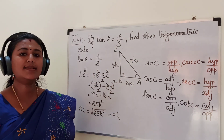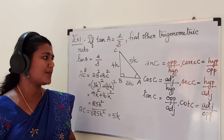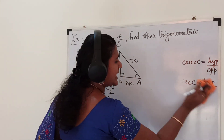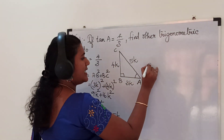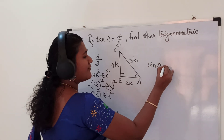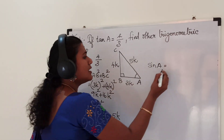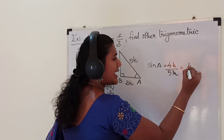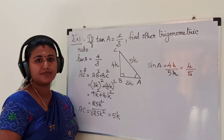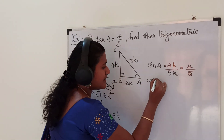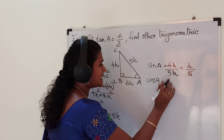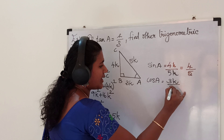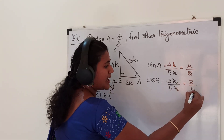Since we know all three sides, we can now find the remaining trigonometric ratios. Sin A is opposite side by hypotenuse, so sin A = 4k by 5k = 4 by 5. Cos A is adjacent side by hypotenuse, so cos A = 3k by 5k = 3 by 5.